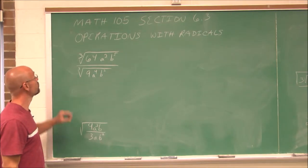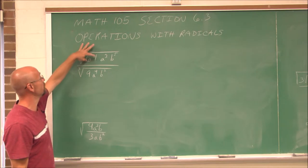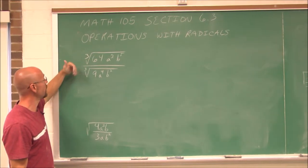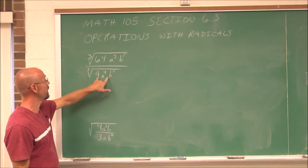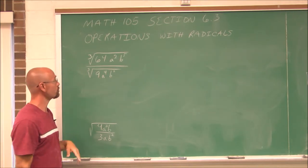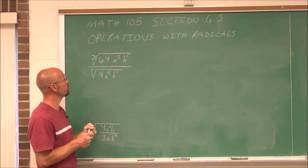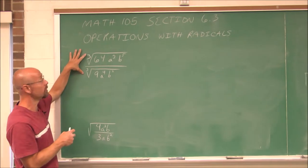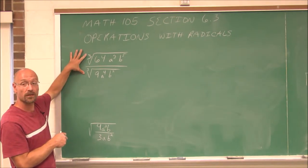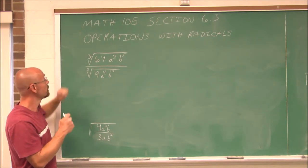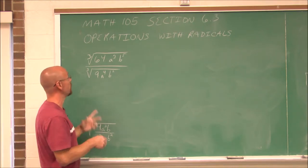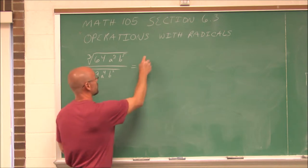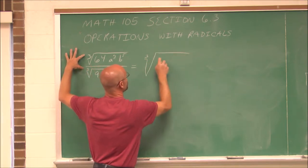Let's attempt this problem. We have the cubed root of the radicand 64a²b⁵ divided by the cubed root of the radicand 9a⁴b². Now there are two ways to approach this one. You could simplify your radicals first, or you could use the quotient rule to write these under the same radical and then attempt to simplify. What I'm going to do is write them under a single radical, since they have the same index of 3.